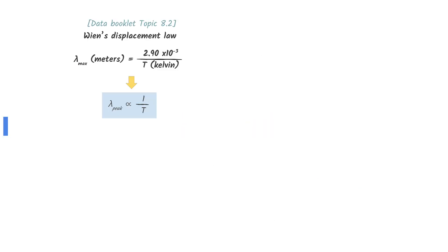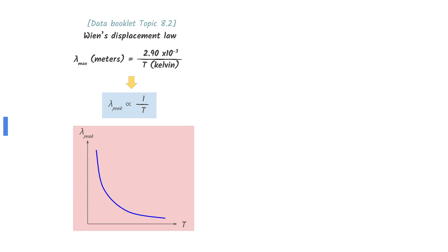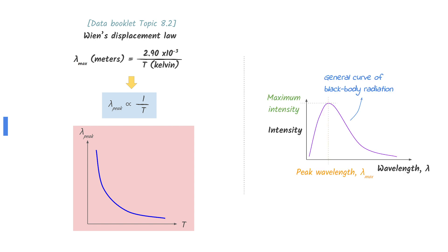From Wien's displacement law given in the data booklet, we can derive that the peak wavelength is inversely proportional to the temperature. This gives a graph that looks like an inverse relationship curve. Be aware of option D — its shape is familiar but it is actually the general curve of black body radiation from an intensity-wavelength graph, not the peak wavelength-temperature relationship.